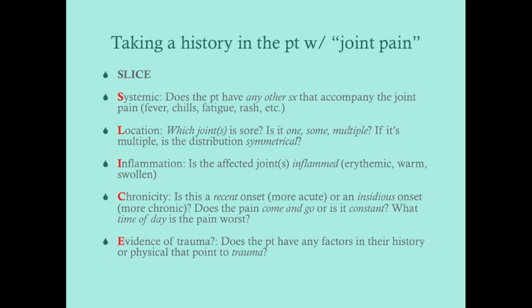I stands for Inflammation — are the joints inflamed, particularly erythematous, warm, swollen, and fluctuant? That pattern points toward gout, pseudogout, rheumatoid arthritis, or septic arthritis, and warrants an arthrocentesis to examine joint fluid. C stands for Chronicity — is this a recent or insidious onset? Recent onset could be polymyalgia rheumatica or septic joint, whereas an insidious, chronic onset suggests rheumatoid arthritis or lupus.